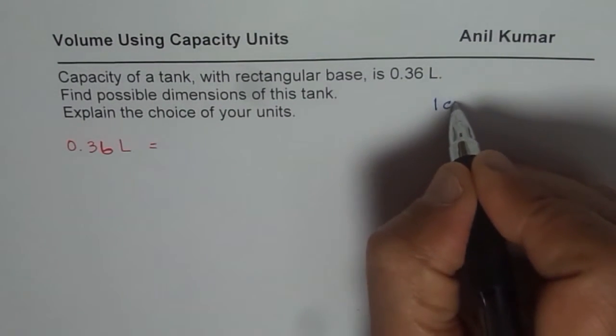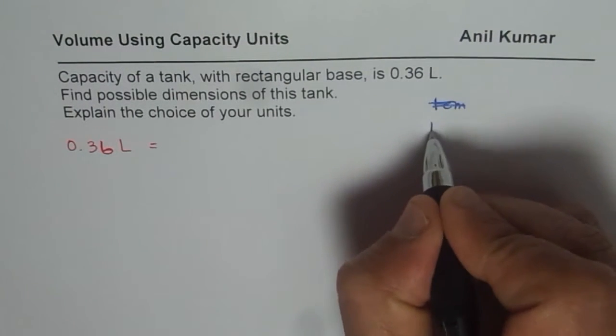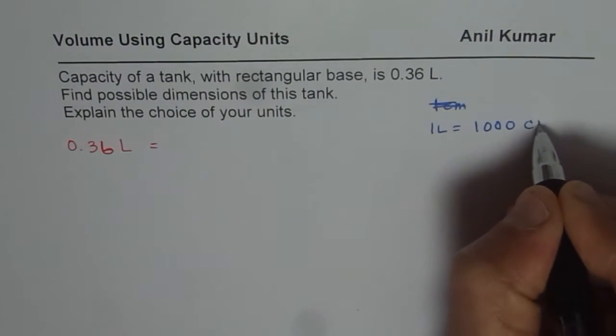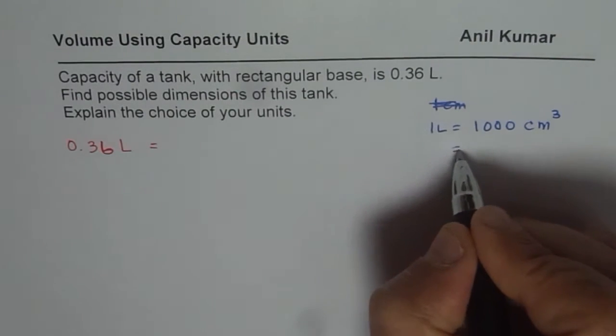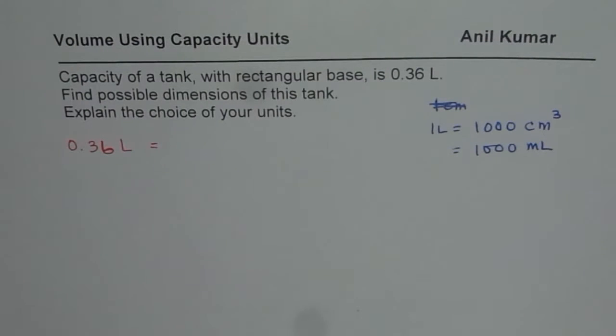So we know one liter is equals to 1000 centimeter cube which is same as 1000 milliliters. So that is how we could convert liters to the linear dimension centimeter cube.